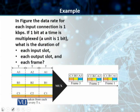Students, we have studied synchronous TDM example. This example relates to synchronous TDM as well and also relates to the concept of time slots and frames that we have already gone through. In the figure, the data rate for each input connection is 1 kilobits per second. If 1 bit at a time is multiplexed, so the minimum unit, the smallest unit is 1 bit, what is the duration of each input slot, what is the duration of each output slot, and what is the duration of each frame?